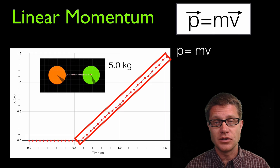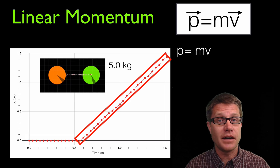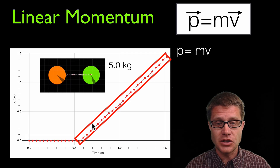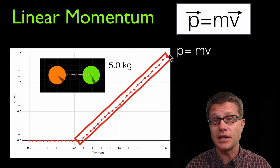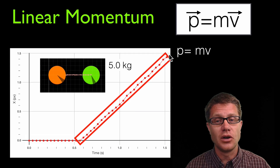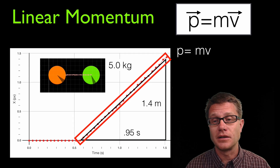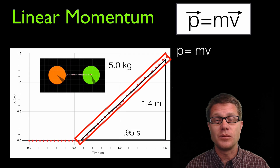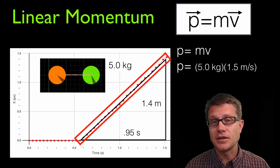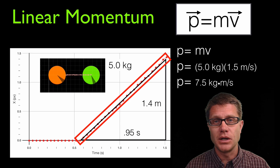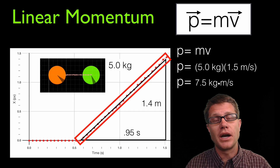Let us watch what happens after the collision — it is going to move. If we can calculate the velocity of the object after the collision we can figure out its momentum. There is a constant change in position over time, meaning constant velocity. Calculating the slope — rise over run — it is 1.4 meters moved over 0.95 seconds, giving a velocity of around 1.5 meters per second. Multiplying the mass, 5 kilograms, times 1.5 meters per second gives 7.5 kilogram meters per second — that is how much momentum was transferred to the green sphere.